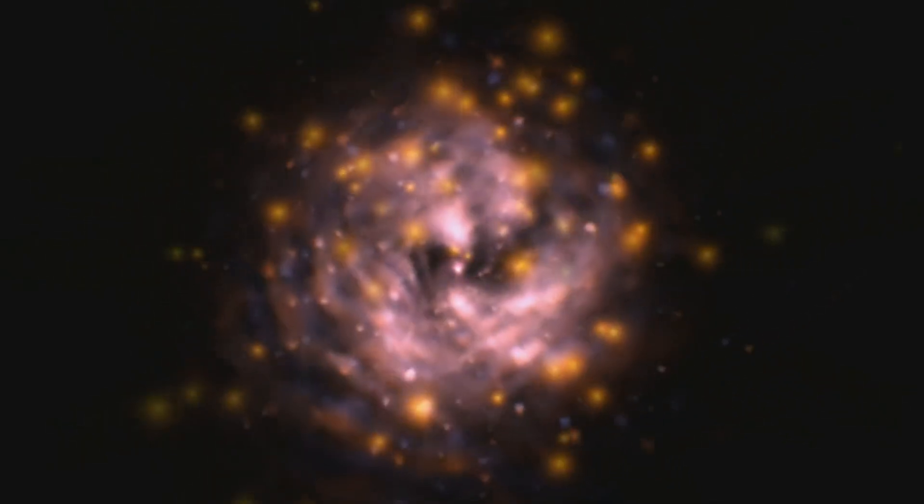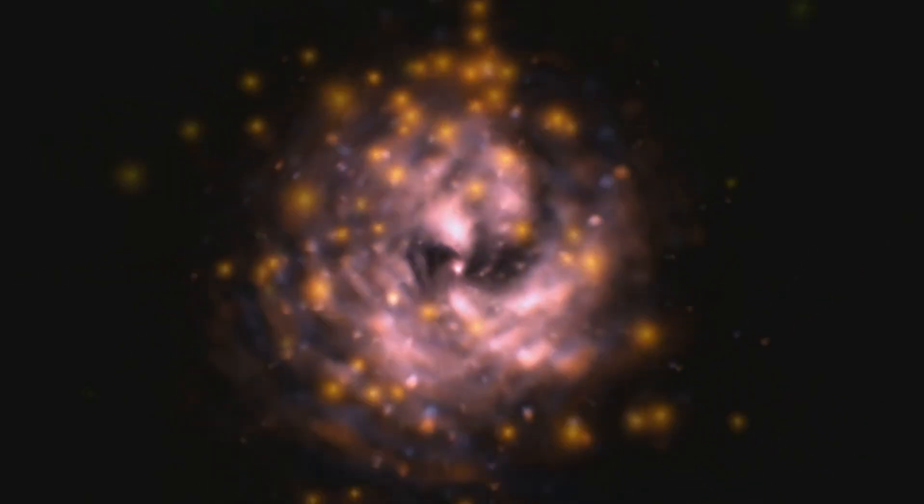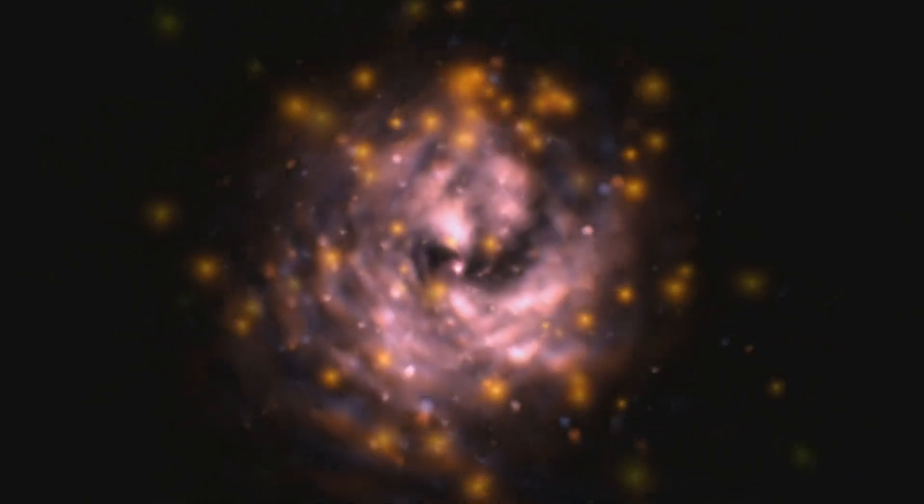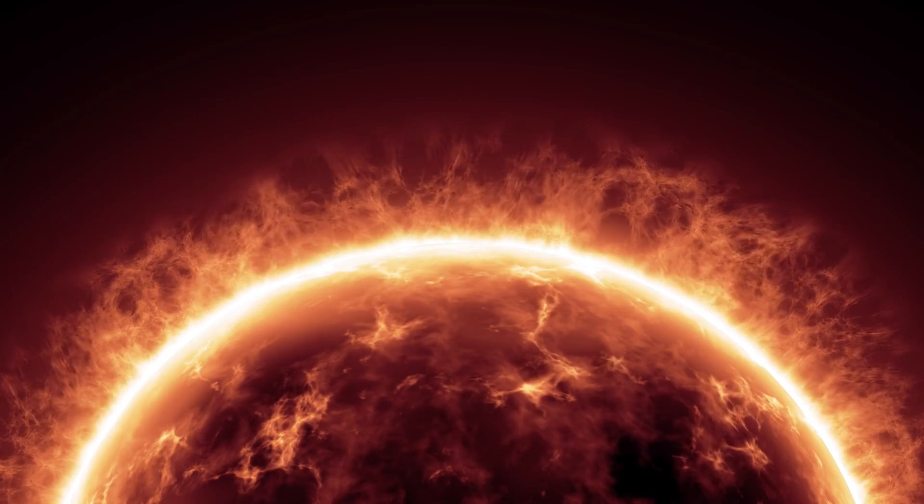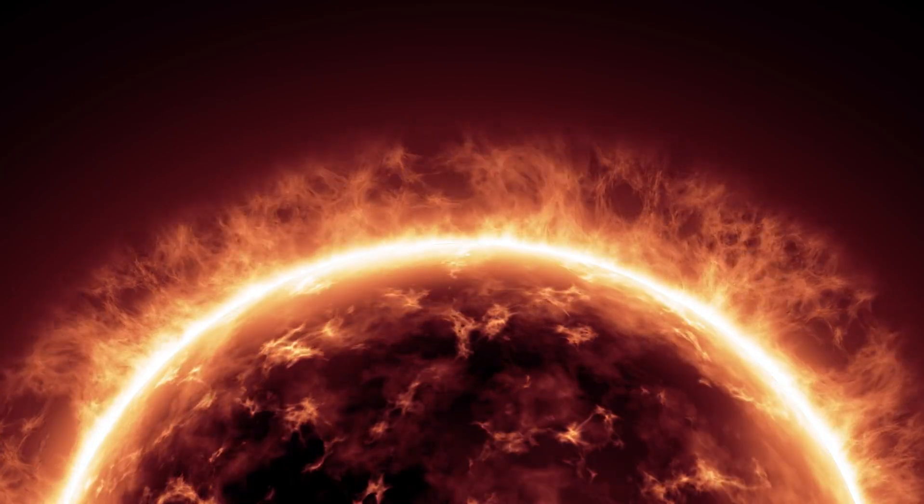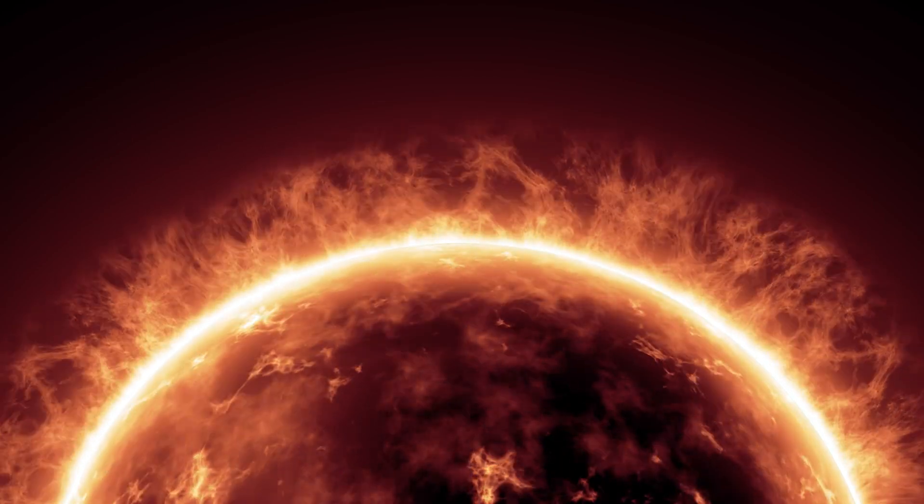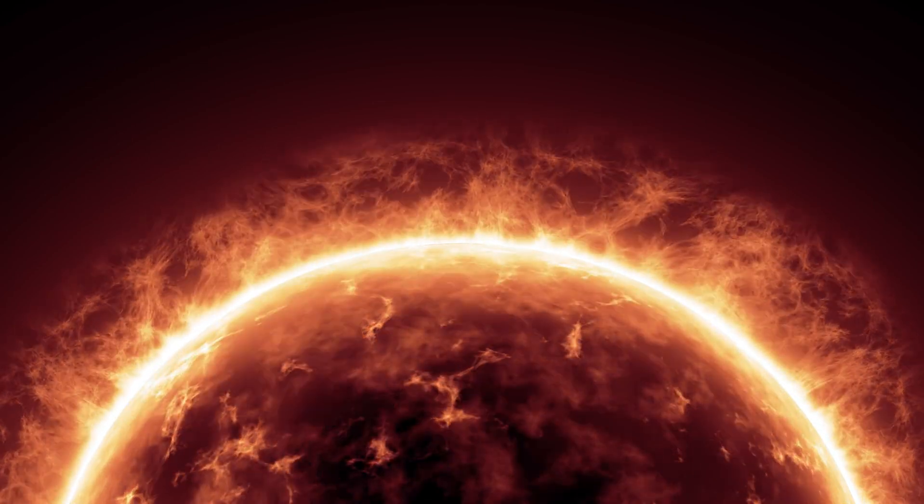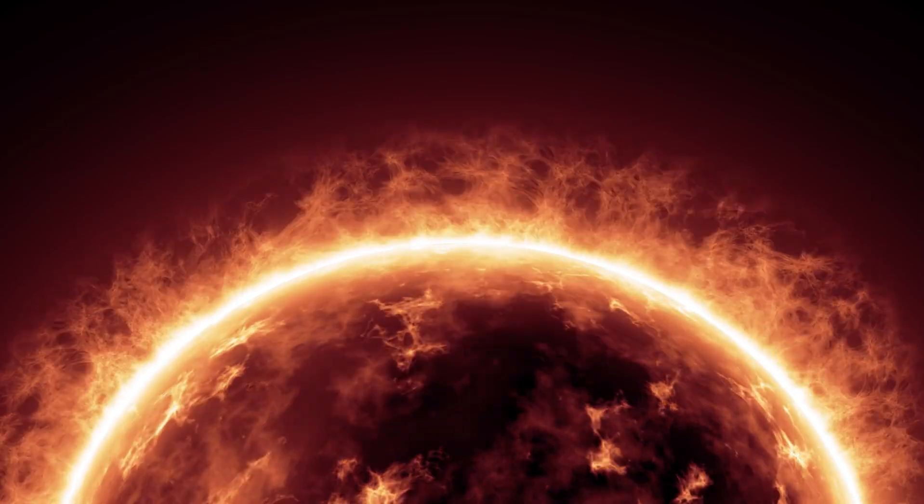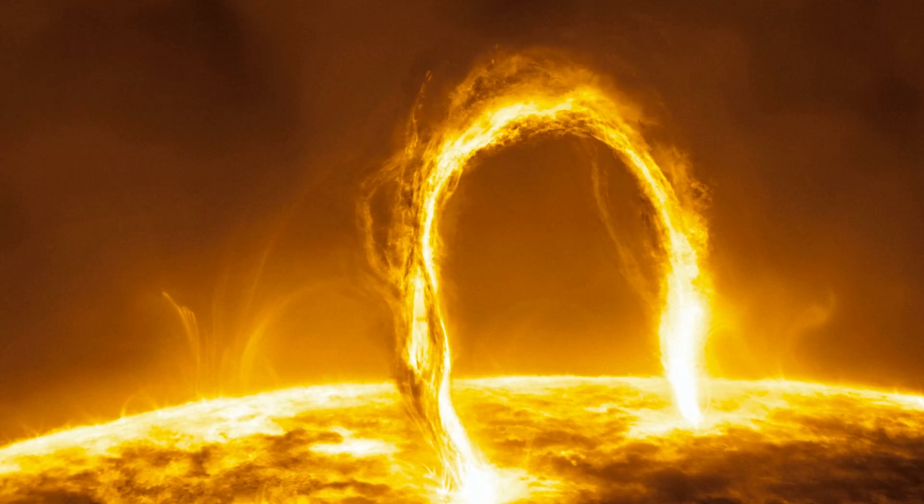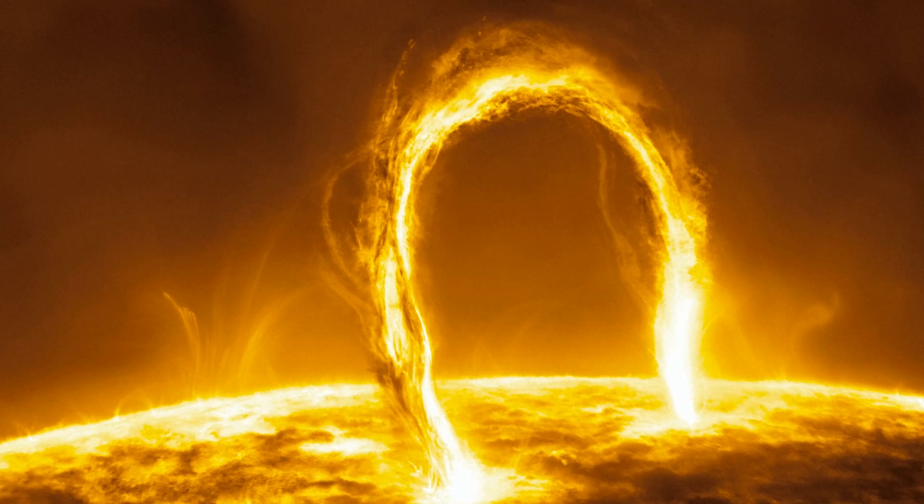Betelgeuse, a red star, loses about one solar mass every 10,000 years as material is ejected unevenly from the star in all directions, resulting in a nebula surrounding the red star. The nebula surrounding Betelgeuse is roughly 30 astronomical units, or 30 times the distance between the sun and Earth, and is 250 times larger than the star itself.